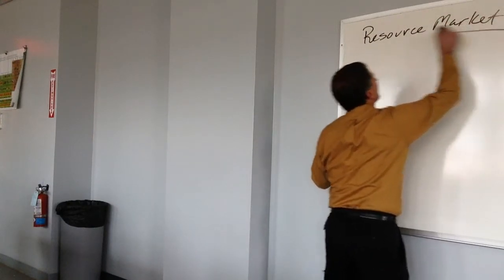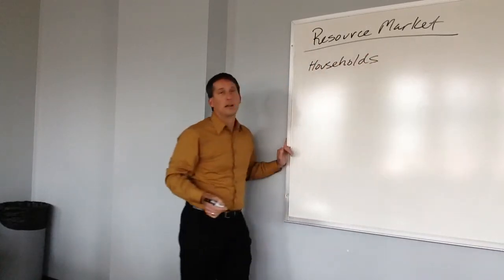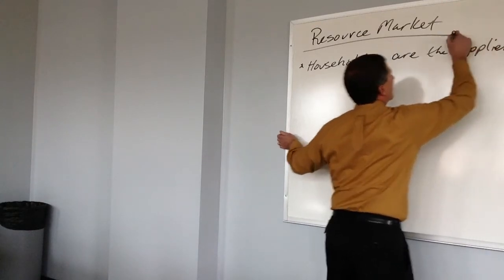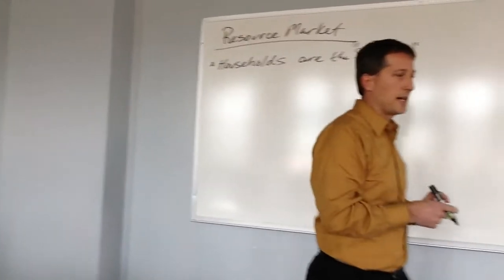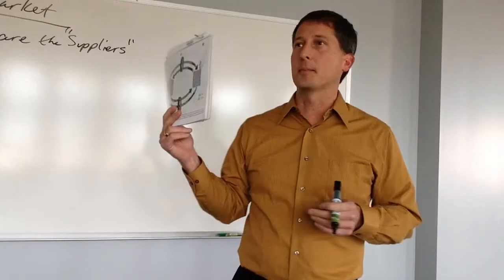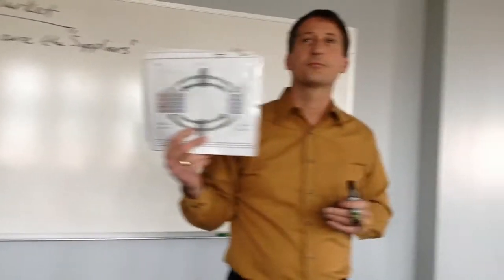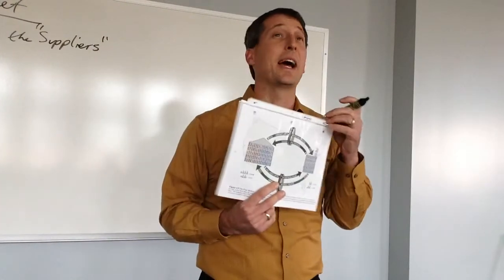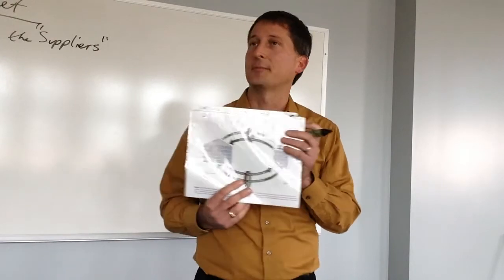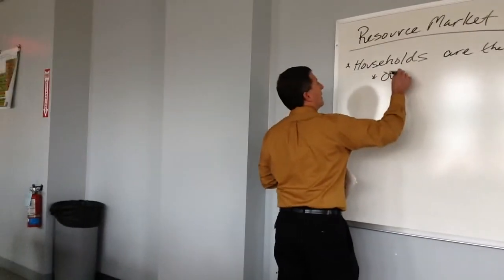In the resource market we can look at our players. Households are the suppliers. Why are households characterized as the suppliers rather than businesses? What are the basic fundamentals of the circular flow that makes them the supply side? They're supplying labor — yes, that's one of the big ones. So households own labor.